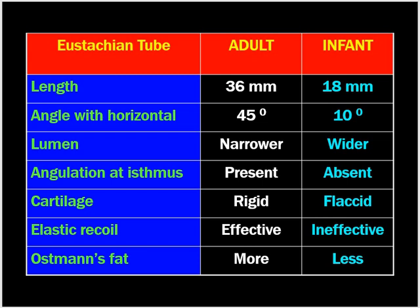This is very important from a theory as well as practical point of view, because children below 7 years of age have poorly functioning Eustachian tubes, which might have a direct association with ear surgery. When surgery on the ear is performed in children, there is a high chance of graft failure during myringoplasty due to Eustachian tube dysfunction. Therefore, you need to be more careful while doing ear surgery in children.